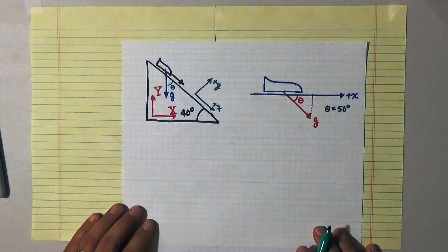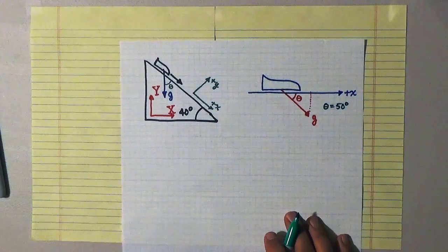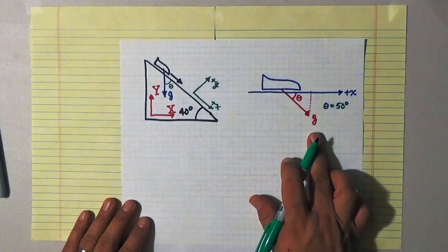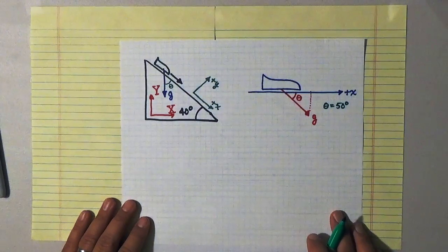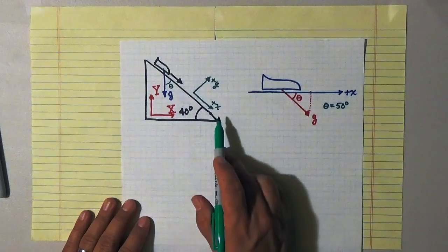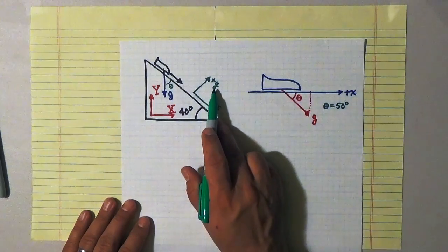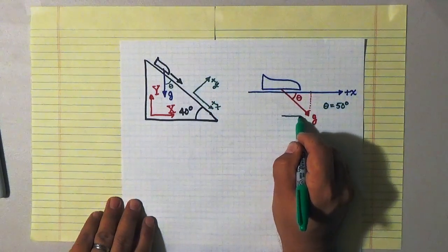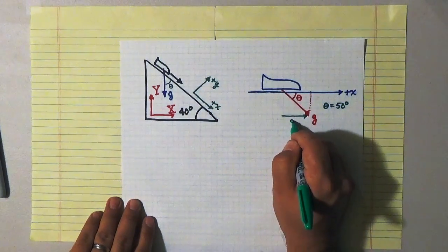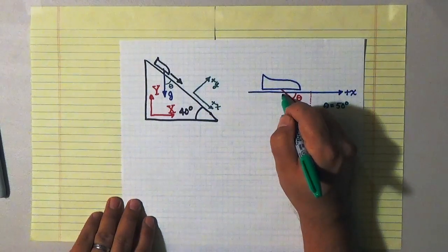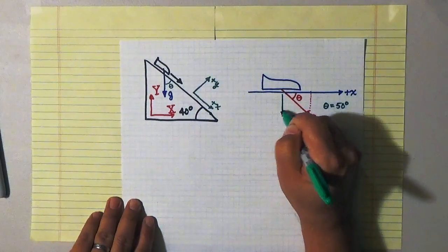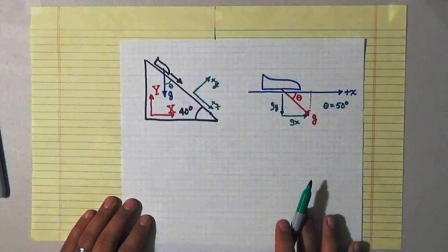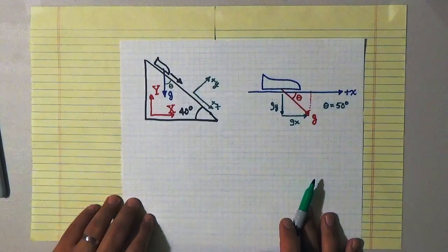So now that I know the angle theta I can decompose the g vector into its x and y components. Where the x and y components are the parts of g that point down the slope or the parts of g that point into the slope. And I can figure out what both of those are using a little bit of trigonometry in my angle there.